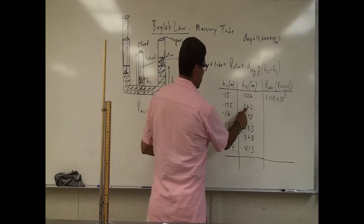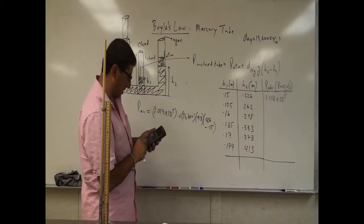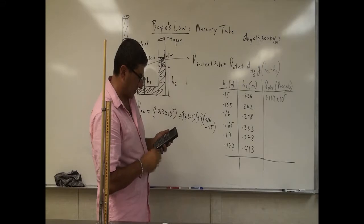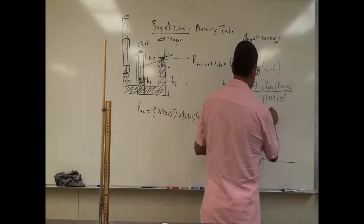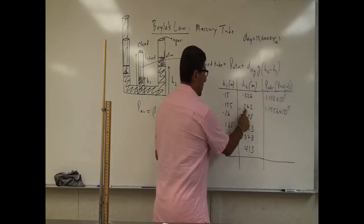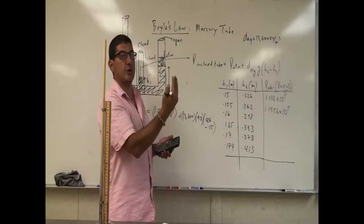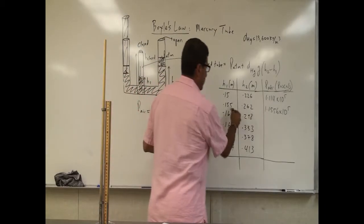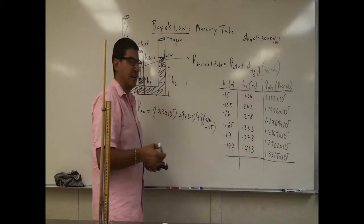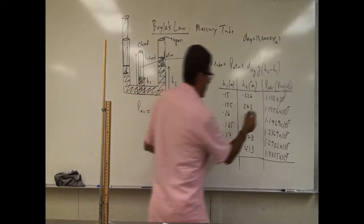All you have to do is change H2 and H1. The rest of the formula stays the same. So you can go back into your formula, just change H2 — so now it's 0.262 — and then H1 is going to be 0.155. So the pressure is 1.1556 times 10 to the fifth. Notice what's happening — the difference between the two heights is getting larger, because as I press this in, the open tube is free to move up. But in the closed tube, it can't go up because the pressure in the closed tube starts getting larger and larger. So the next one is going to be 0.298, 0.16.